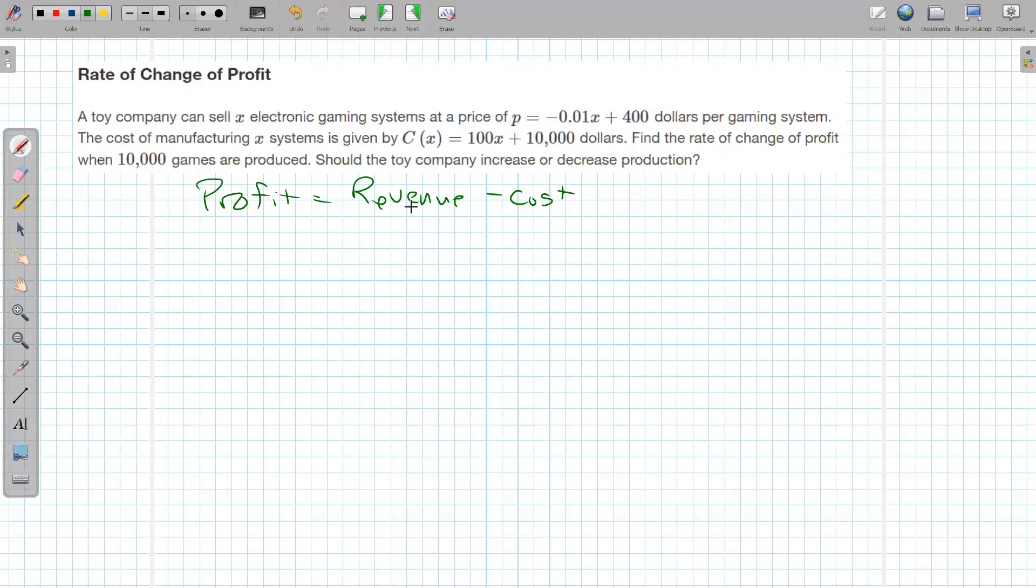And revenue is the price that you're selling at times the number of objects if there's a fixed price. And we're going to say that there is a fixed price based on that function right there. So that's going to be x times the price, x times negative one hundredth x plus four hundred. And then from that we have to subtract the cost right here, so 100x plus ten thousand.